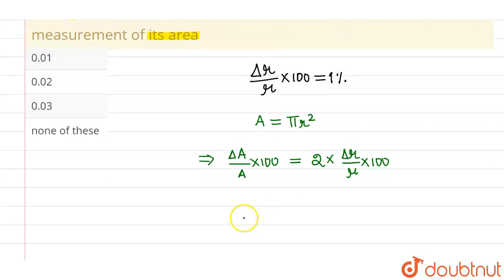So what I can say from here that ΔA/A × 100 will be equals to 2 times of, now value of Δr/r × 100 is 1%. So this is 1% and that comes out to be 2%. That means,